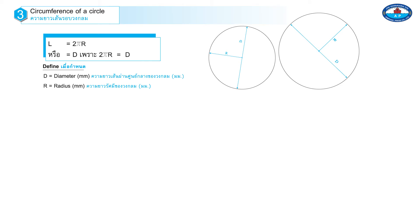3. Circumference of a Circle: L equals 2 pi r. Define D equals Diameter, R equals Radius.